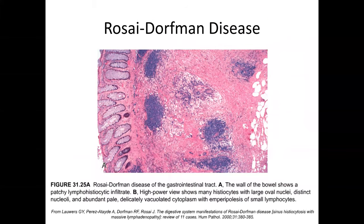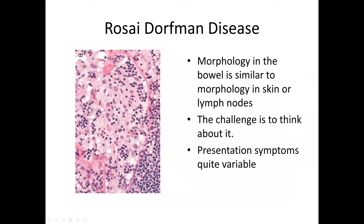Rosai-Dorfman disease has been described in the colon, though it is not frequently encountered. The morphology tends to be similar to what you see elsewhere, but the challenge is to recognize it. What you'd expect to see are clusters of lymphocytes and areas of more pale cells representing the histiocytic component, along with emperipolesis — lymphocytes involving the cytoplasmic spaces of the larger histiocyte cells. The presentation is not particularly specific, so recognizing that it can occur here is key.